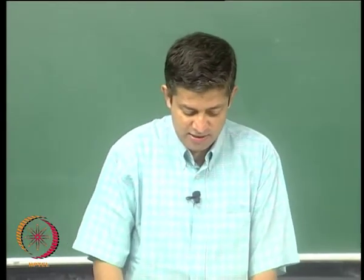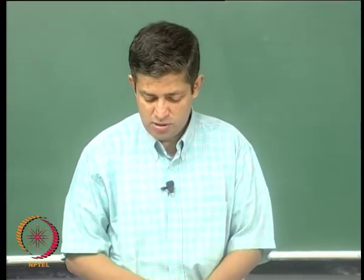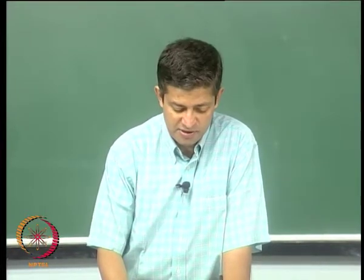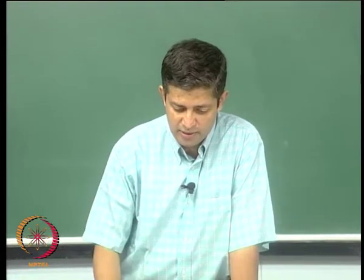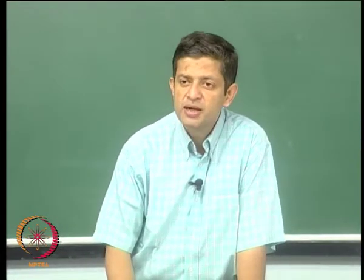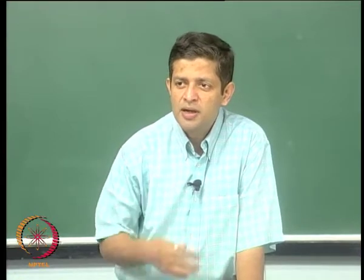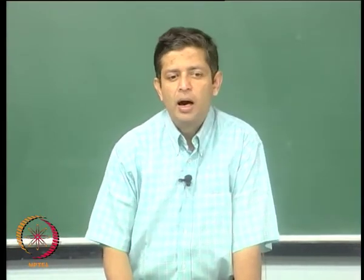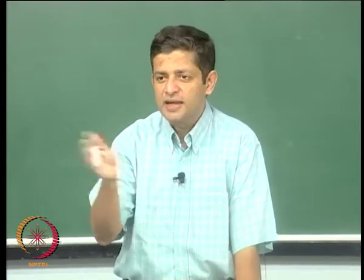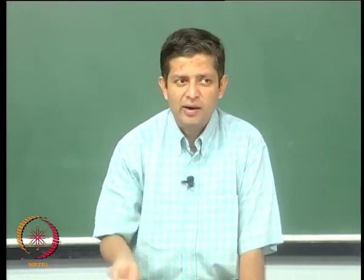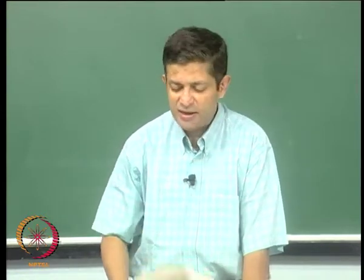Good morning. In the last class we had derived the expression for the unsteady variation of pressure in the rocket motor. We had considered the mass balance in the rocket motor to derive this equation. In this class let us look at how we can use that to predict what is the time required for ignition and what is the time required for extinction. Till now we had looked at only the steady part, that is the burning in the steady portion. In this class let us look at the other two unsteady portions, namely ignition and extinction.